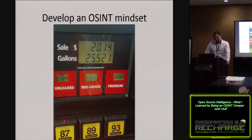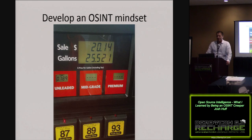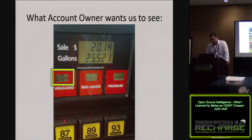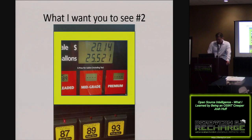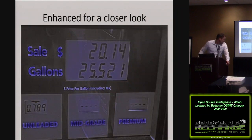A little exercise I like to do at these talks to help develop the OSINT mindset. I took this image off a Facebook page last year — it had a tag like, 'hey, look at this deal at Kroger.' So I throw it up there, and I look at a couple things. This is what the account owner wants us to see: they got an awesome deal, 78 cents a gallon, put it up online to brag to friends. First thing I want you to see: they just put 25 and a half gallons of gas into something, so we can infer they're in an SUV, truck, or minivan.